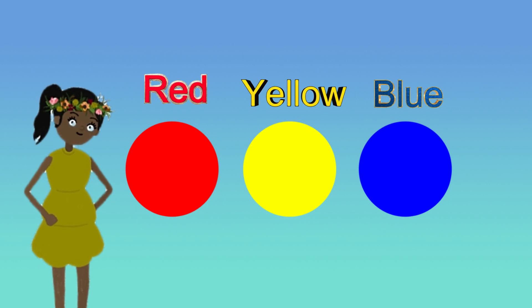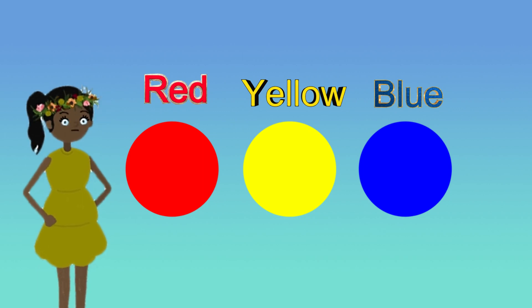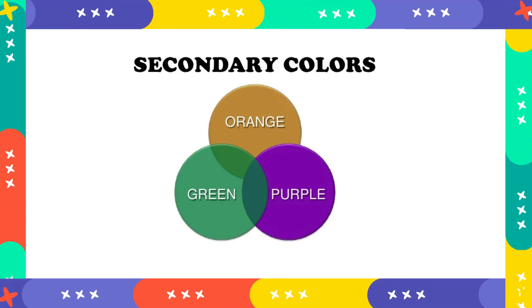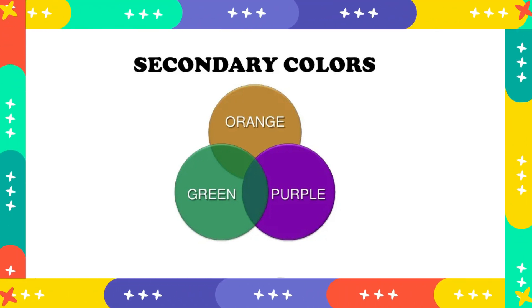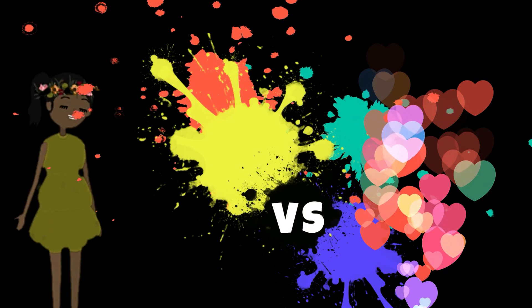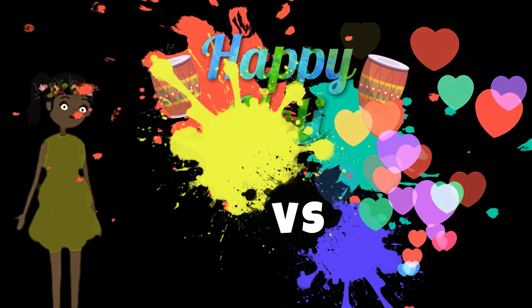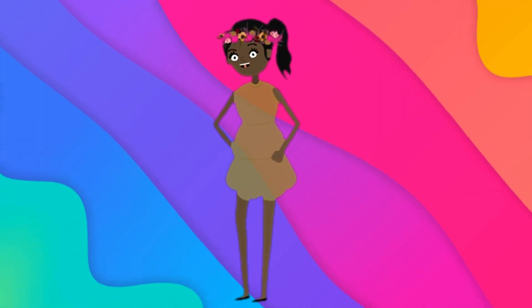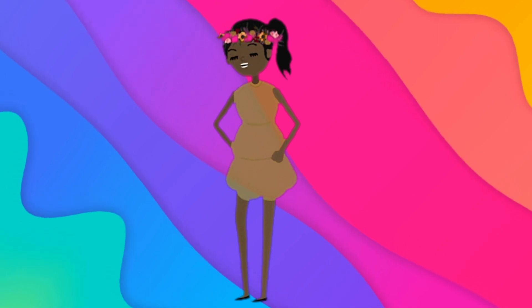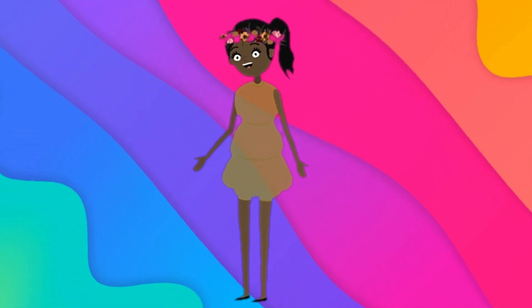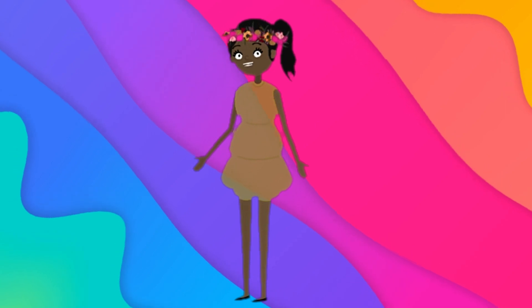These three colors are like the building blocks of all the other colors in the world. Without them, we wouldn't have the amazing spectrum of colors we see every day. The secondary colors — now imagine if these primary colors had a party and decided to mix and mingle. When two primary colors come together, they create what we call secondary colors. There are three secondary colors and they're just as cool as the primary ones.